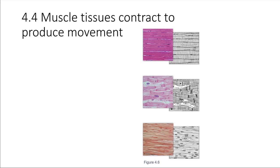If you have a lot of these cells lined up together and they're all connected, then when they all contract, what's going to happen is that whole section of tissue will get shorter in one dimension.